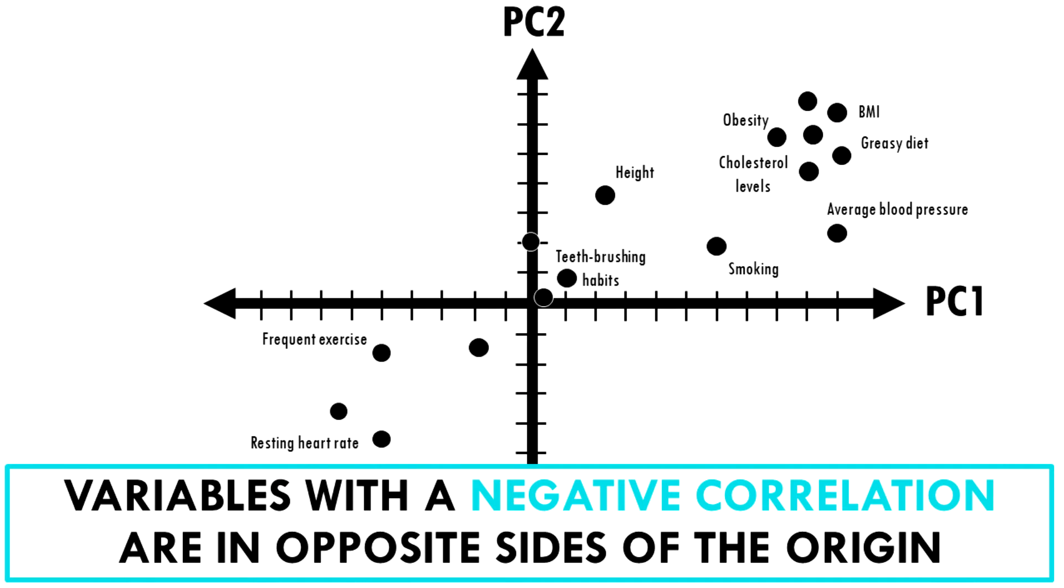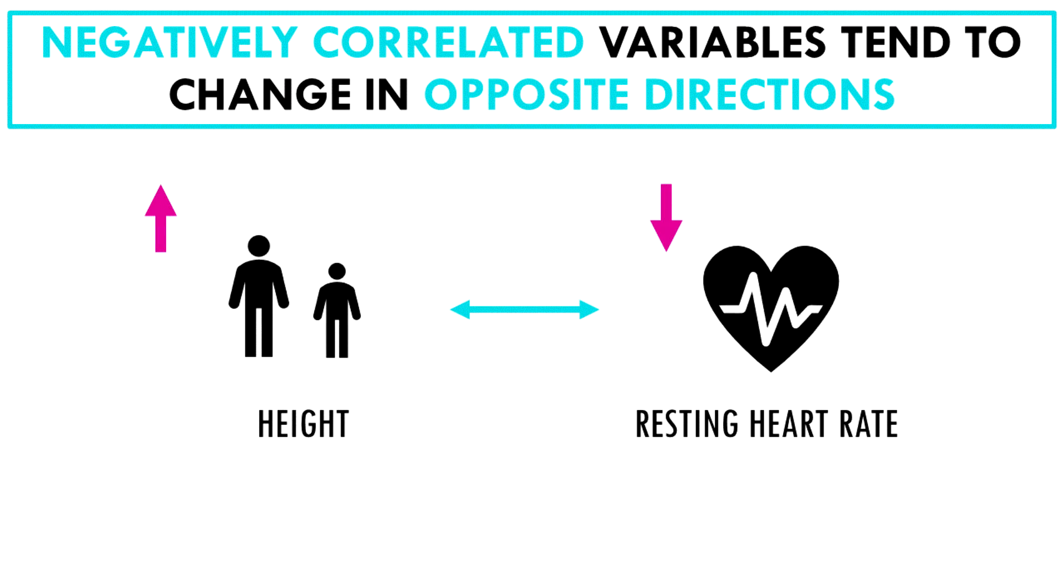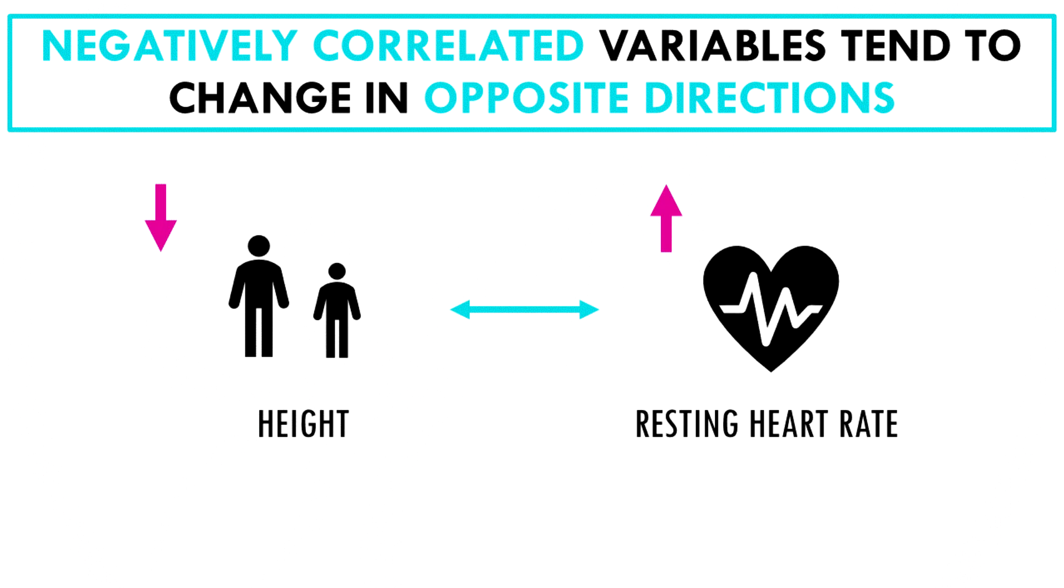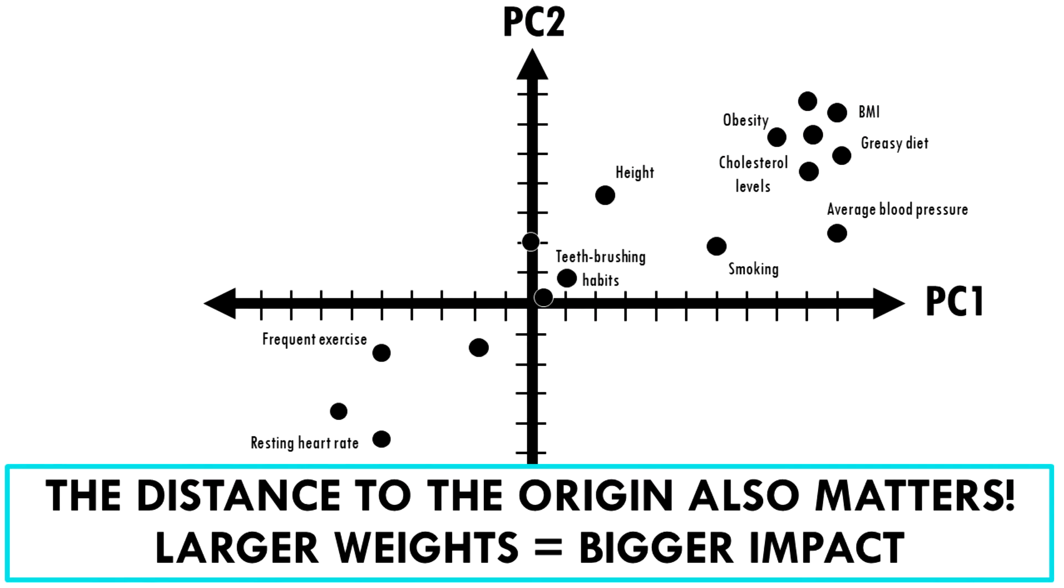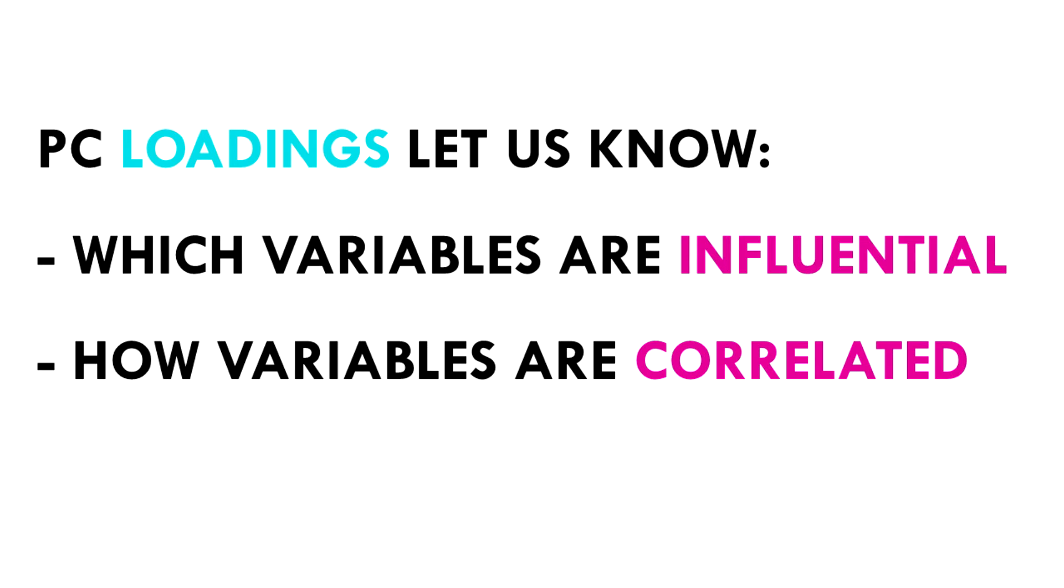On the other hand, when variables are negatively or inversely correlated, they are positioned on opposite sides of the plot origin, in diagonally opposed quadrants. For example, your resting heart rate and height are inversely correlated, meaning that taller people tend to have lower resting rates compared to shorter people. Moreover, the distance to the origin also gives you information. The further away a variable is from the origin, the stronger the impact it has on the model. For example, here obesity, blood pressure, and average heart rate seem to be good variables to separate longer lifespans from shorter lifespans. So this loading plot is a great way of seeing the relationship between our 200 variables at the same time. It lets you know what variables are influential and also how the variables are correlated.